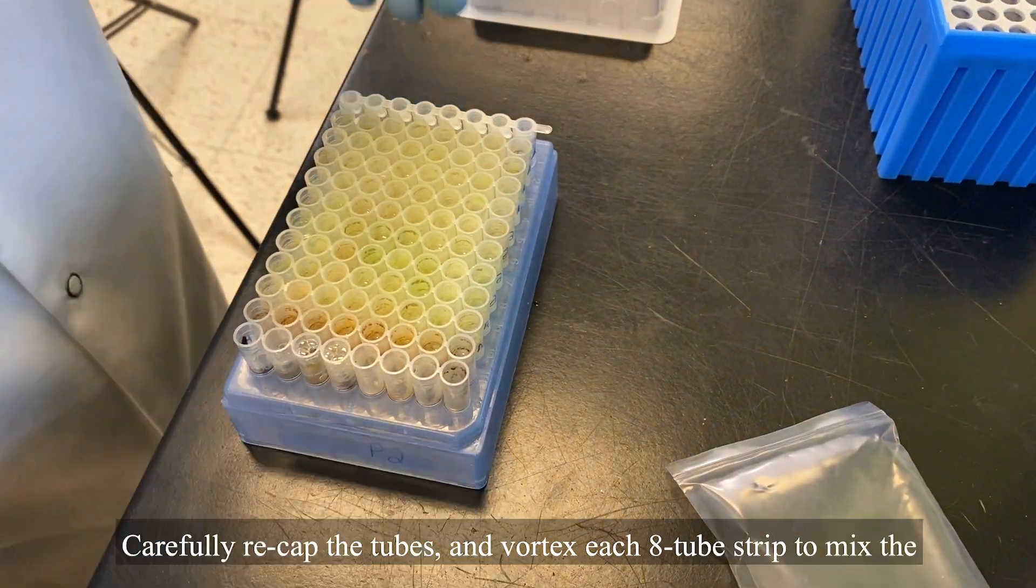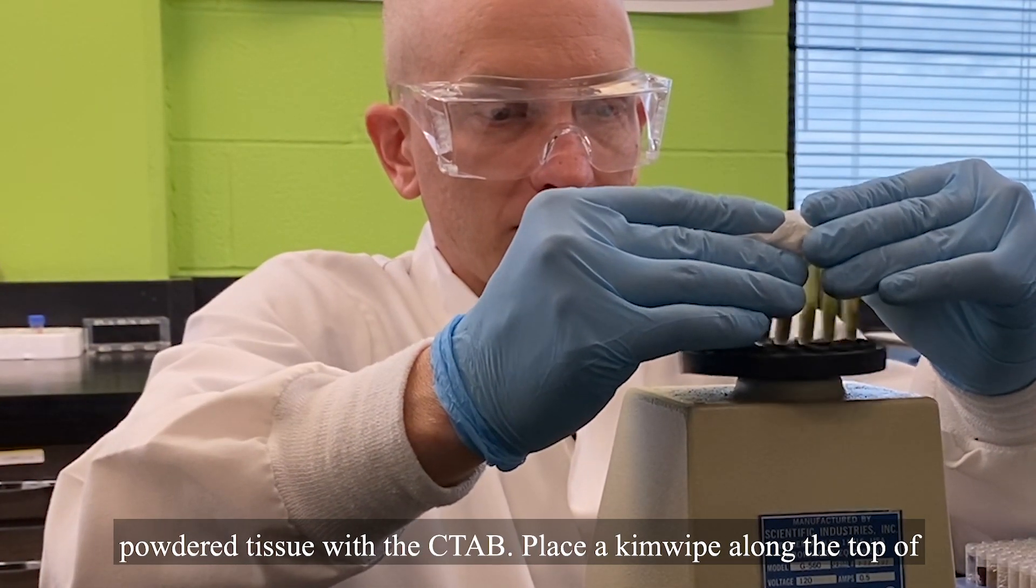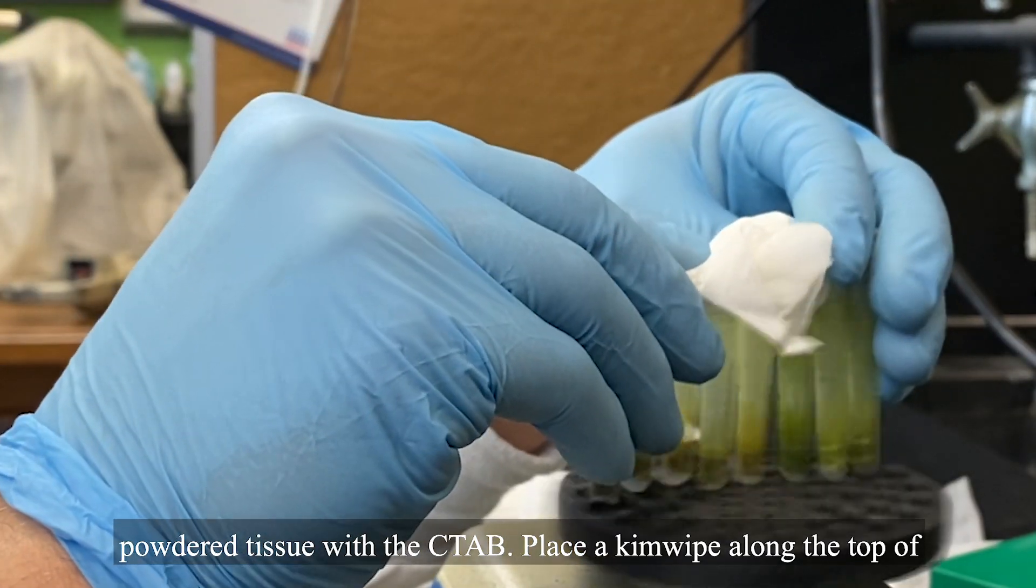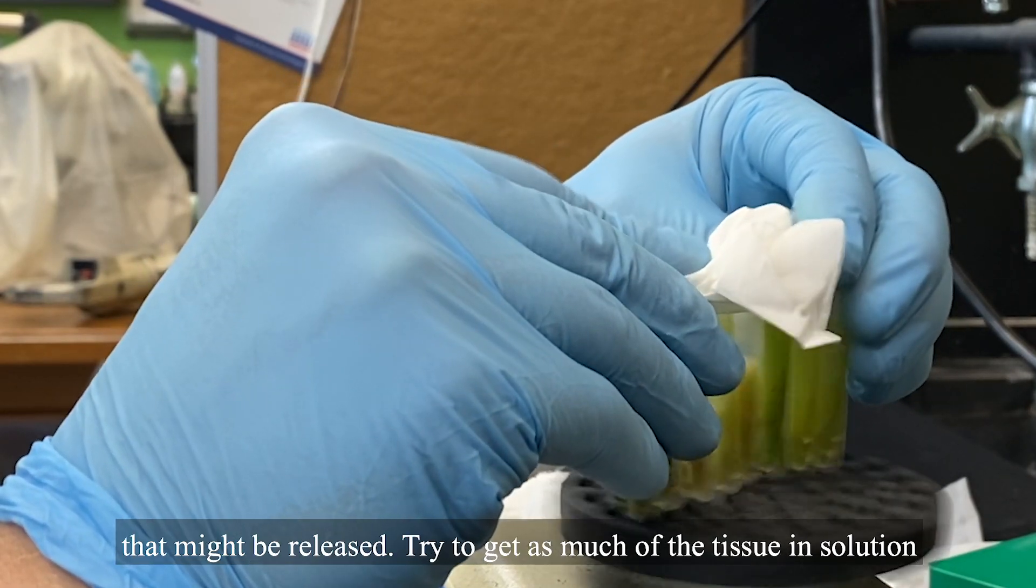Carefully recap the tubes and vortex each 8-tube strip to mix the powdered tissue with the CTAB. Place a chem wipe along the top of each H strip during vortexing in order to capture any excess liquid that might be released.